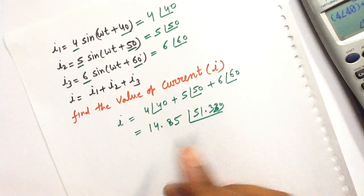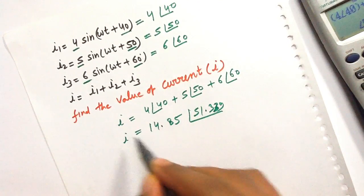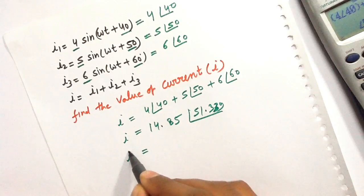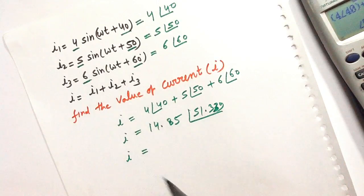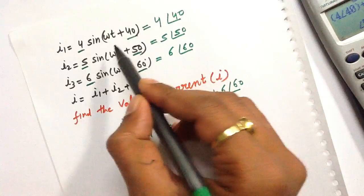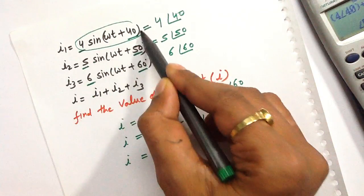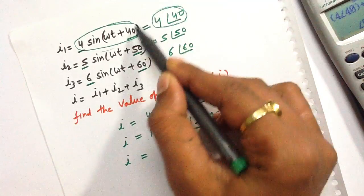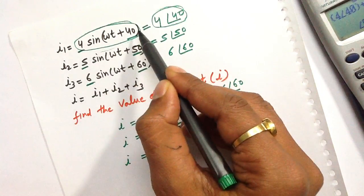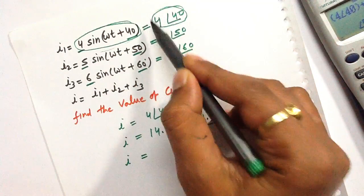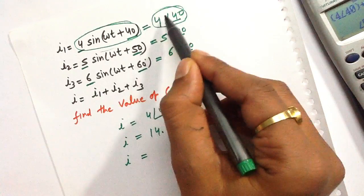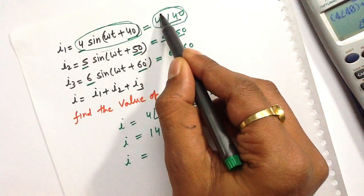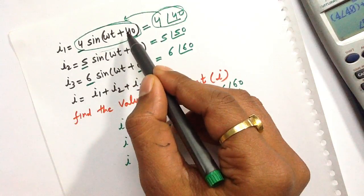We can convert this polar form to trigonometric form. For example, 4 sin(ωt + 40) can be written as 4∠40, and vice versa. A value in the form A∠φ can be written as A sin(ωt + φ).